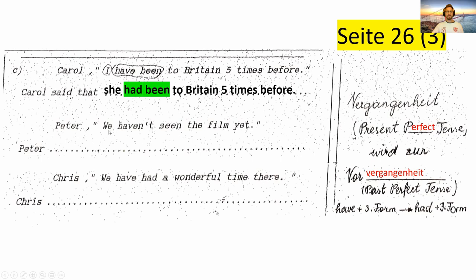Nächstes Beispiel: Peter — 'We haven't seen the film yet.' Das Zeitwort ist 'haven't seen'. Daraus wird 'hadn't' — 'had not' oder 'hadn't'. 'We' wird übrigens zu 'they'. Peter said that they hadn't seen the film yet.